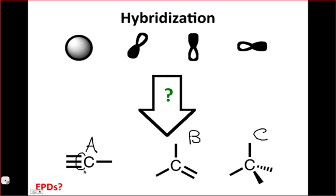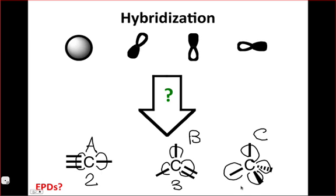All right, so hopefully after looking at this, you can see that here we have two electron pair domains, two sigma bonds coming off of that carbon. Here we have three, one for each of the sigma bonds again. And in the tetrahedral carbon, we have four EPDs. This is going to become important because the number of electron pair domains is related to the number of sigma bonds. And so we can use this number of EPDs to guide our thinking about hybridization and how we take the simple atomic orbitals and build these complex geometries out of those.